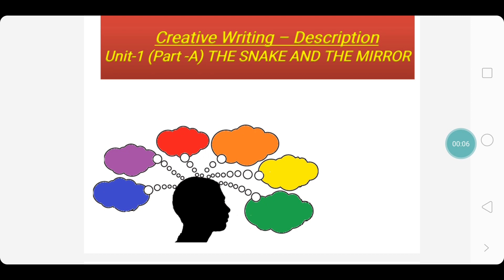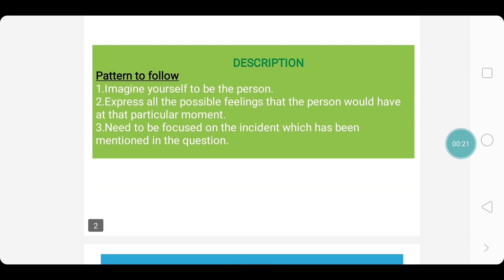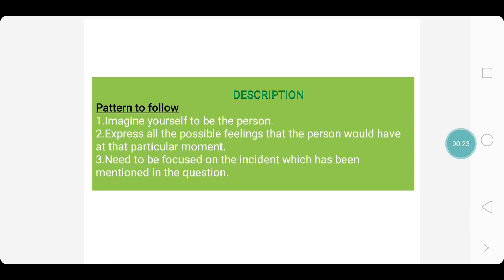Hello children, today let us learn the creative writing description for the lesson 'The Snake and the Mirror' from Unit 1, Part A. Here is a pattern to be followed in order to write a description: imagine yourself to be the person, express all the possible feelings that the person would have at that particular moment, and you need to be focused on the incident which has been mentioned in the question.